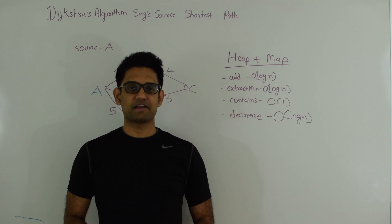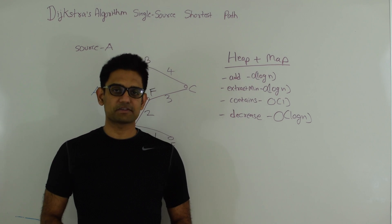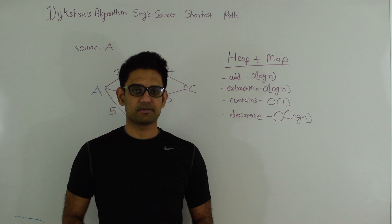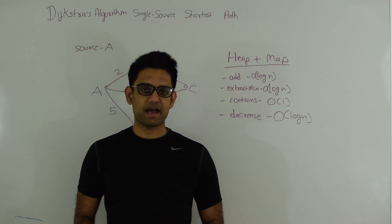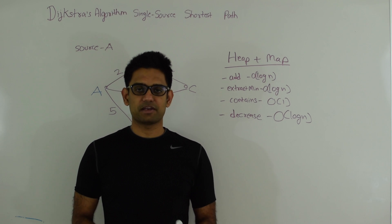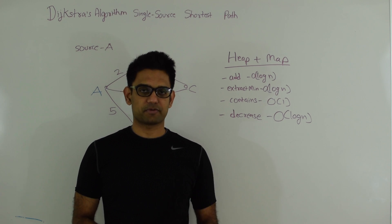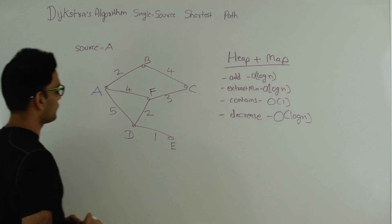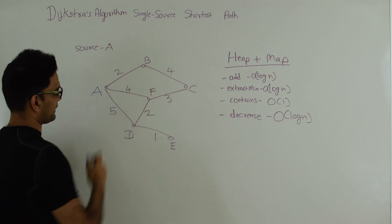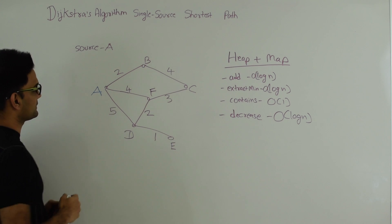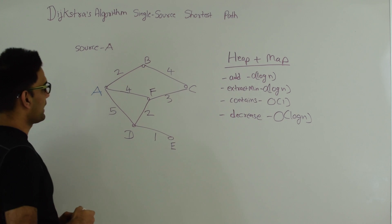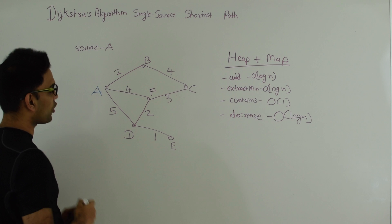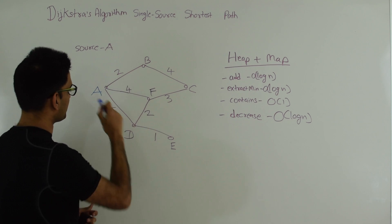Hello friends, my name is Tushar and today we're going to talk about single source shortest path using Dijkstra's algorithm. So what is single source shortest path? You're given a graph and a source vertex, and you have to find the shortest path of every other vertex from this source vertex. For example, here I have this very simple graph and my source vertex is A, and I have to find the shortest distance of every other vertex from A.